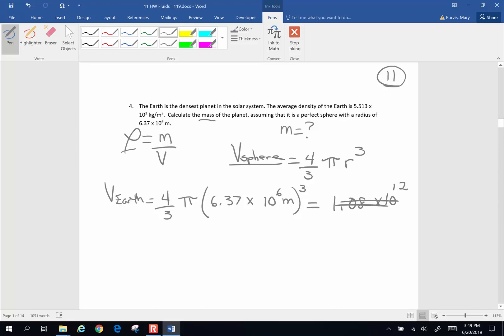I'm going to open parenthesis, 6.37 times 10 to the sixth, close parenthesis, raise the whole thing to the third power. There we go. Times pi. See, Mary can make boo-boos on her calculator too. Times 4 divided by 3. Would you believe 1.08 times 10 to the 21st? Much better. That is going to be meters to the third power. That's going to be the volume of the Earth.